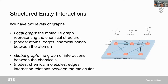With this example graph, we have the Entity Interaction Graph with two levels. The first level is the Local Graph, which is the Molecule Graph representing the chemical structure. The nodes in this graph are the atoms in the molecule and the edges are the chemical bonds. We also have the Global Graph — the graph of interactions between chemicals — where nodes are chemical molecules and edges are the interaction relations between molecules.